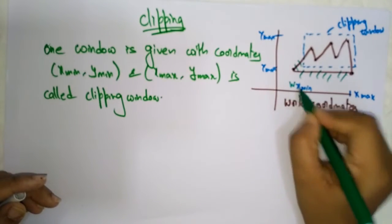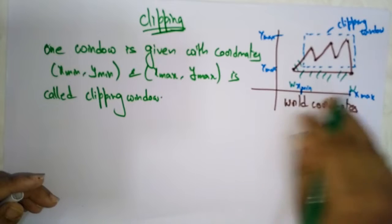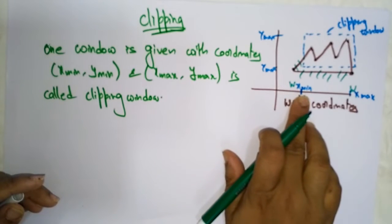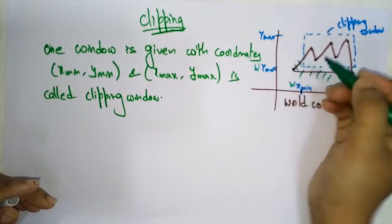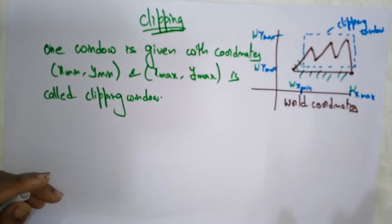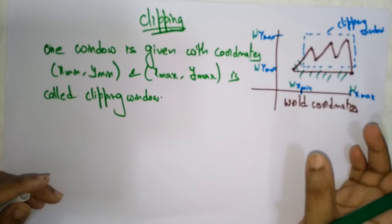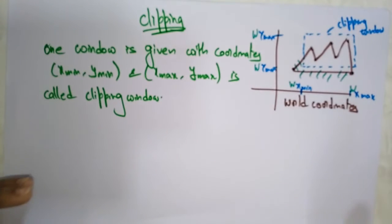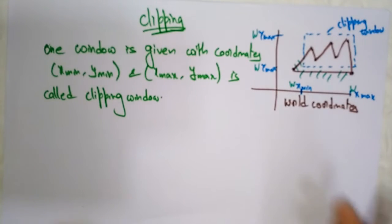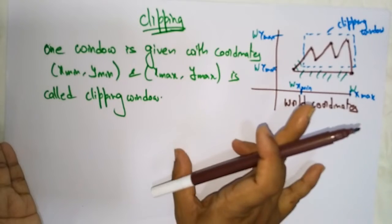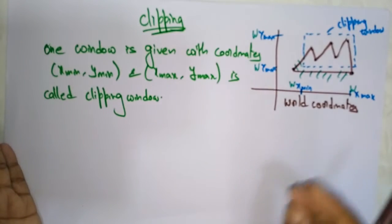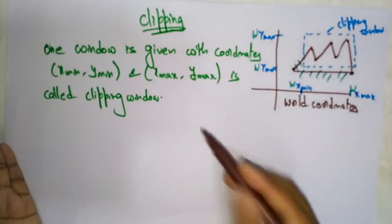We call it WX minimum, WX maximum — meaning window X axis minimum and window X axis maximum — and window Y axis minimum and window Y axis maximum. Because drawing things to a display takes time, we clip everything outside the window. Whatever image you want to print inside the window gets printed, and the remaining portion outside the screen gets clipped.